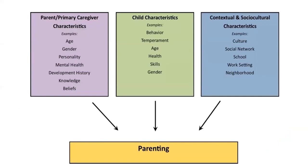The factors influencing parenthood include parent or caregiver characteristics such as age, gender, personality, mental health, developmental history, and knowledge of parenting. There are also child's characteristics — behavior, temperament, age, health, skills, and gender — and social-cultural characteristics such as culture, social network, school, work setting, and neighborhood.